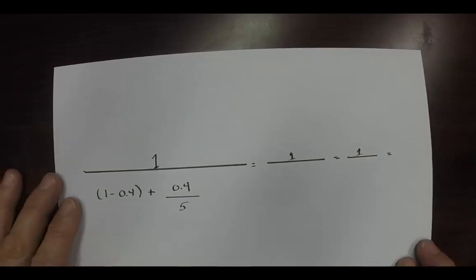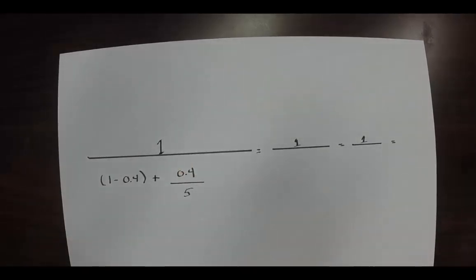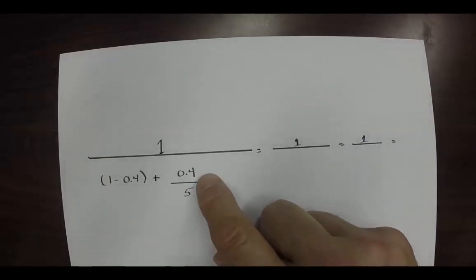So here is our equation and we have one over one minus point four, which is the percentage of the CPU that is a fraction that's enhanced. And then what we have is the fraction that it's enhanced divided by the overall speed up, in other words a factor of five.